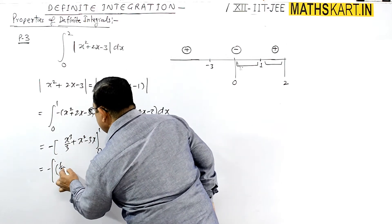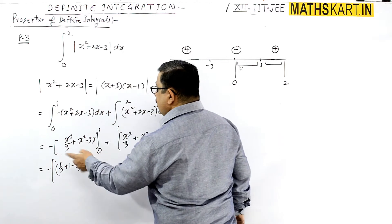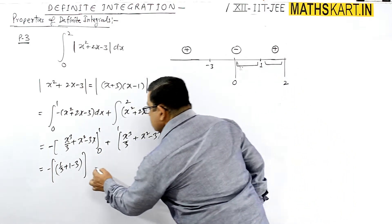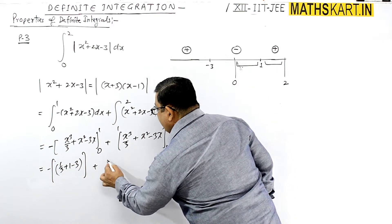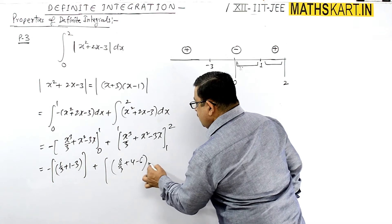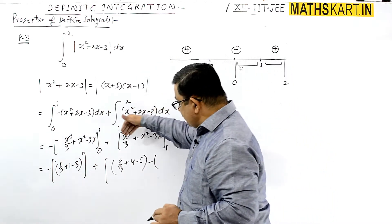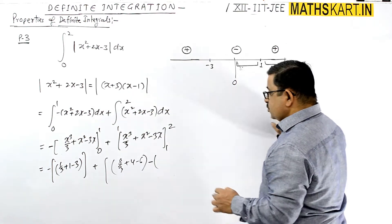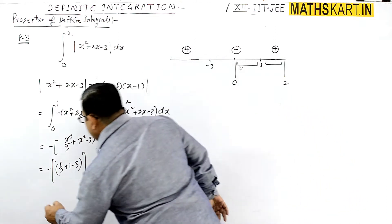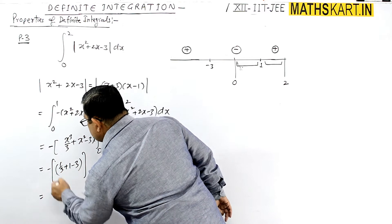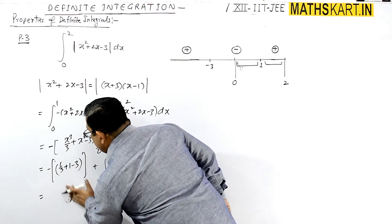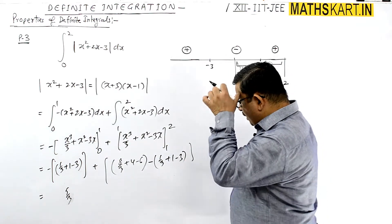So evaluating: it is 1/3 + 1 - 3 for the upper limit. If we place 0 we leave it because it gives 0. Then for the second part at x = 2: 8/3 + 4 - 6 = 8/3 - 2. Minus the lower limit value at x = 1: 1/3 + 1 - 3, which gives 1/3 - 2.